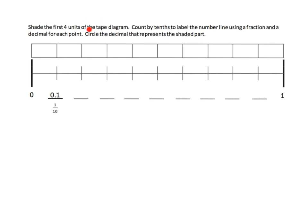The first thing the directions say is shade in the first four units of the tape diagram. So we will do that. There is our shade—we've shaded in the first four.